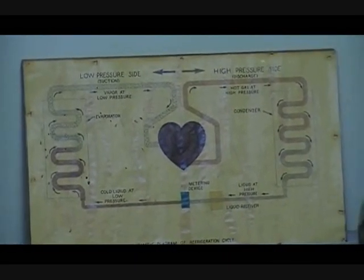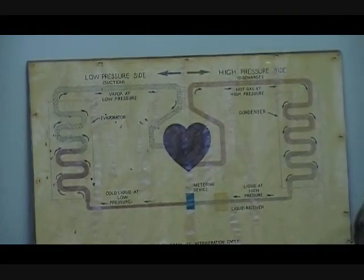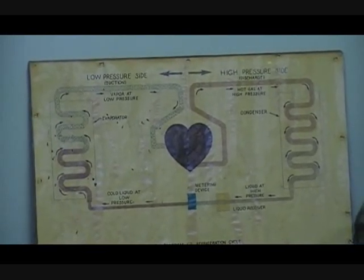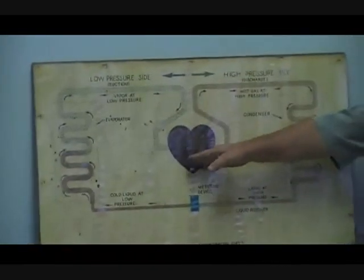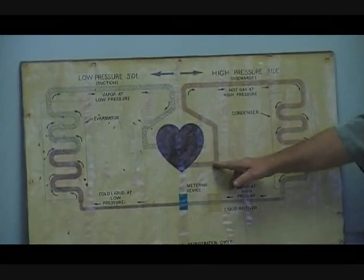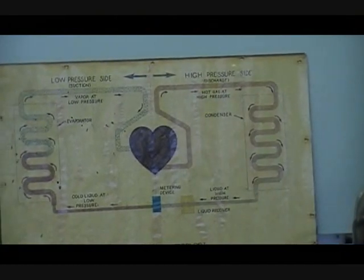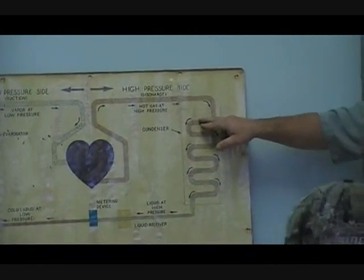Now let's get a little more detail. I'm going to use not exact pressures or temperatures and describe what's happening, and then we'll go back and do one using some typical pressures and temperatures. Let's look at the compressor. The compressor takes a low-pressure gas, compresses it to a high-pressure gas, and it enters into the discharge line as a superheated high-pressure gas. Remember that term superheated — it's above the boiling point. It goes into the discharge line and enters into the condenser.